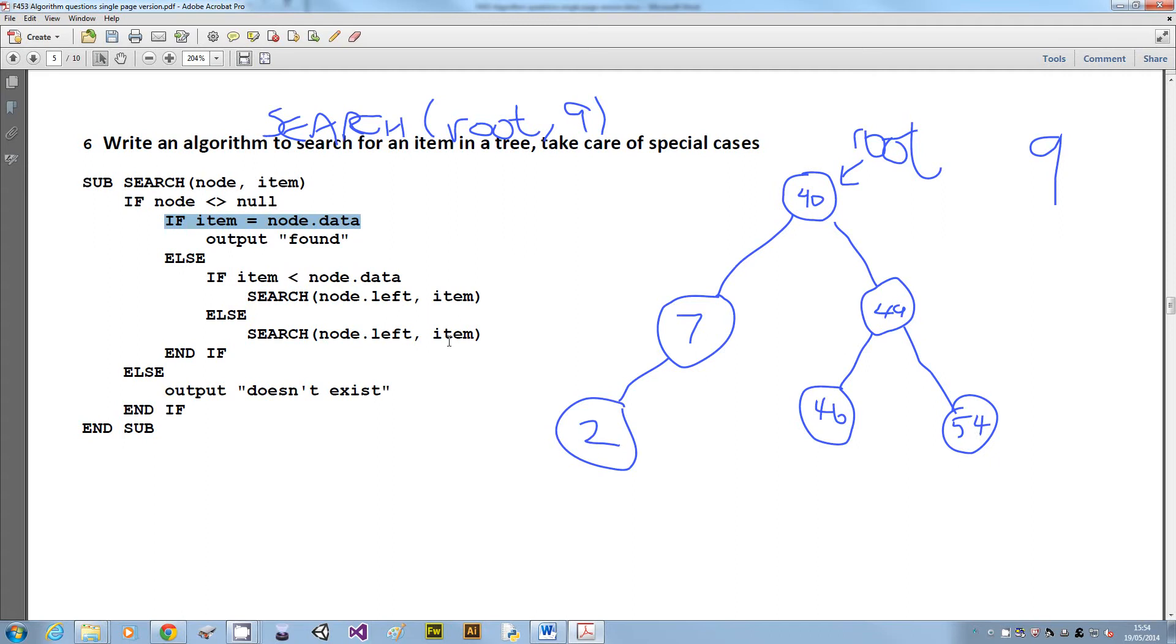We haven't found the data we're looking for, so we're going into this else and we're saying okay, the item we're looking for, nine, is that less than the data at the current node? Yes it is. So we're going to basically discard this part of the tree because all these numbers are bigger than 40, it's just like the binary search. So we move down and follow the left branch.